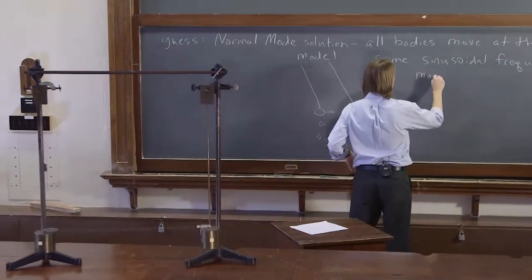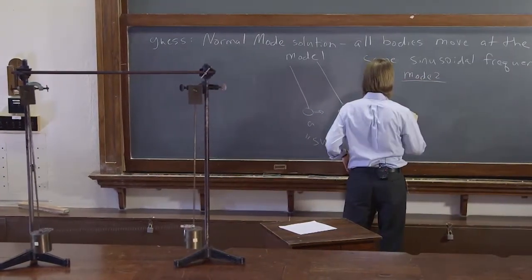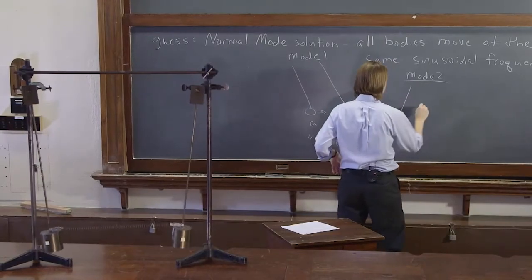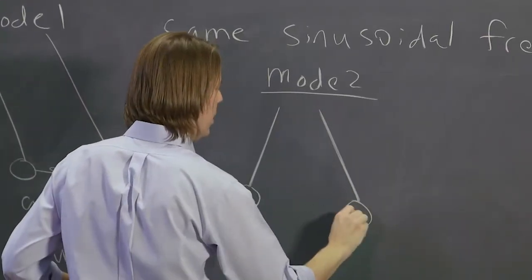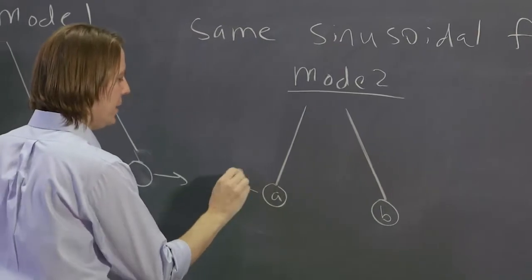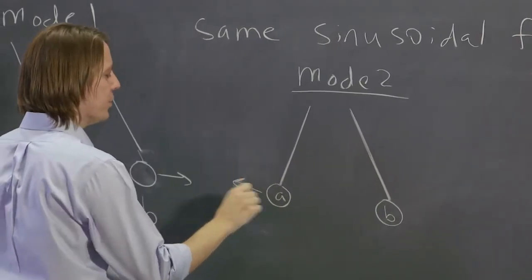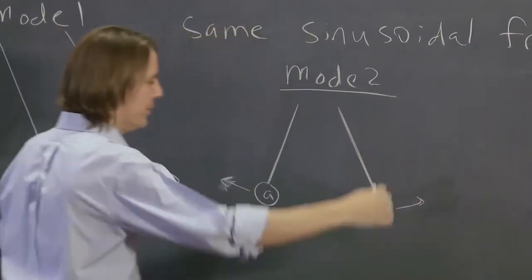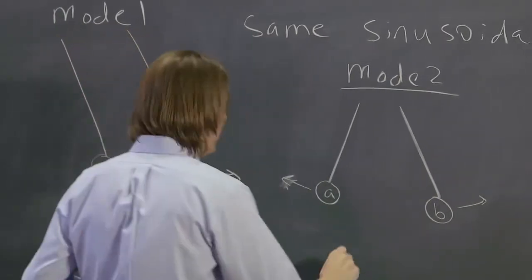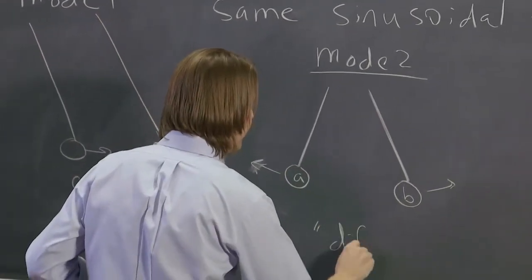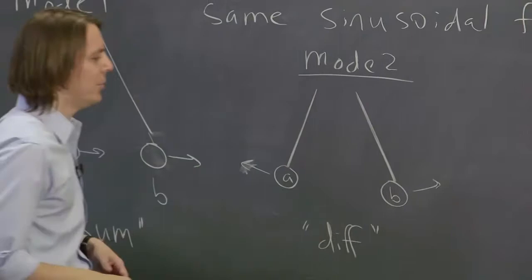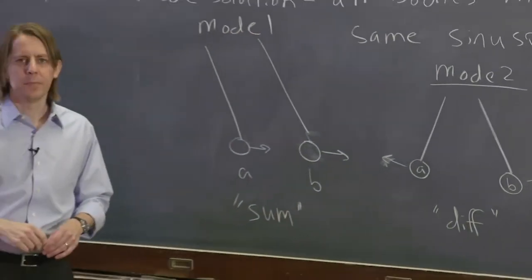So we could kind of draw that mode. We could call it mode two and draw it kind of like this. A is out here, B is out there. And at the moment I'm drawing the picture, this one's moving out and this one's moving out. Then they come back together. We'll call this diff for difference, the sum mode and the difference mode.